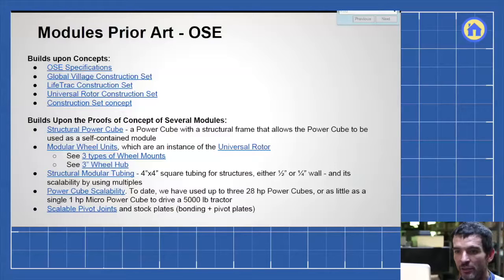And here you can link to all that's been done, the structural power cube, modular wheel units, structural modular tubing, the fact that we can scale the power cubes, that we can scale the pivot joints and other joints.